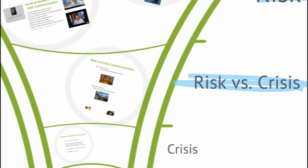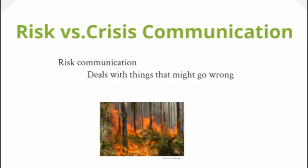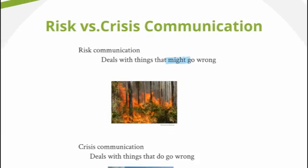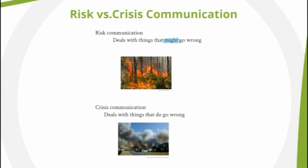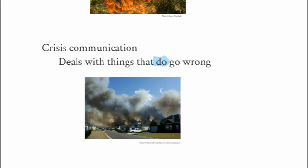Some of you might be wondering: what's the difference between risk and crisis communication? Risk communication deals with things that might go wrong. Here we have a photo of a wildfire — a wildfire represents a risk situation. Crisis communication, on the other hand, deals with things that do go wrong. Here we have a photo of a wildfire posing a direct risk to life and property — this is a crisis situation. Risk communication responds to any event that could cause public concern and could focus media attention on an organization or agency.